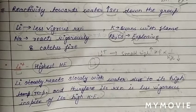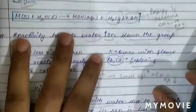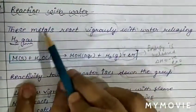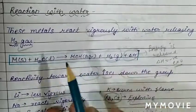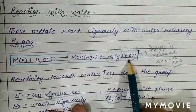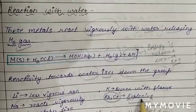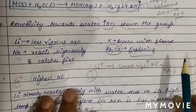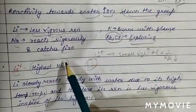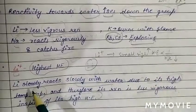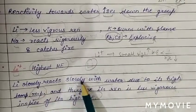In summary, the reactivity towards water increases down the group. When alkali metals react with water, the reaction is vigorous — hydrogen gas is released and energy is released (exothermic process), producing a basic solution. Reactivity increases down the group: lithium is least vigorous, while rubidium and cesium give explosive reactions. Lithium reacts slowly due to its high melting point, despite having the highest hydration energy.